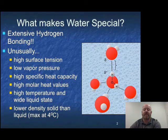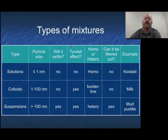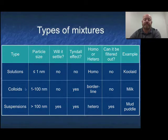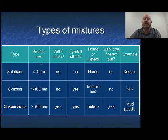All these unique properties come from the strong hydrogen bonding within the water molecule. Now, when dealing with mixtures, we have three types: solutions, colloids, and suspensions. We'll spend most of our time on solutions, but we'll mention the other two as well. The deciding factor between these types of mixtures is particle size. Less than 1 nanometer: you're a solution. 1 to 100 nanometers: you're a colloid. More than 100 nanometers: you're a suspension.